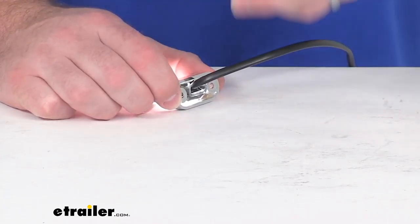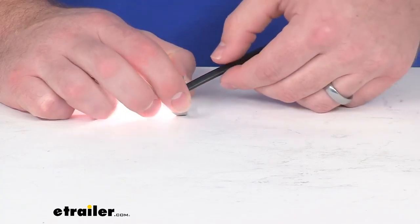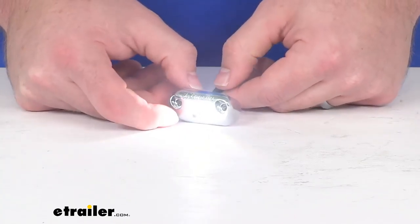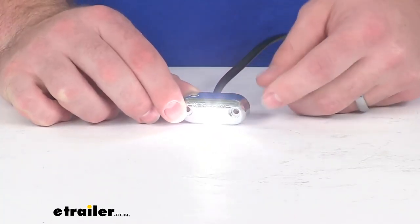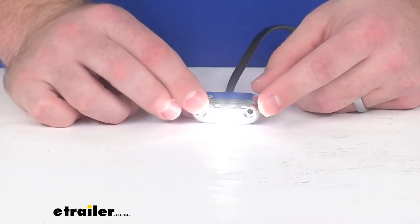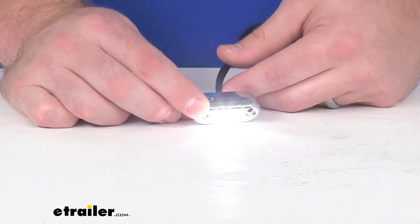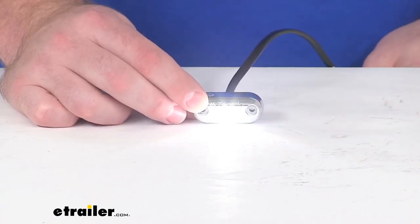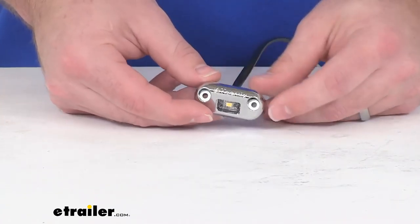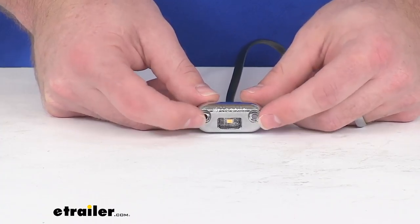This does have a military grade construction of the circuit board so it is going to hold up really well for you. The urethane potting offers better protection than your common epoxy potting, so all your connections are going to stay mounted and ready for you. You're not going to have to worry about them wiggling free.